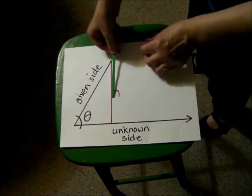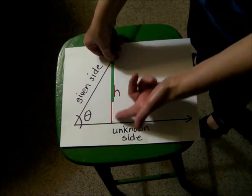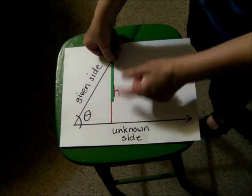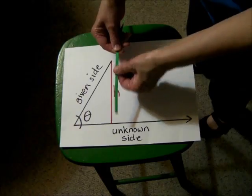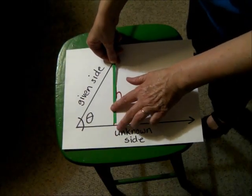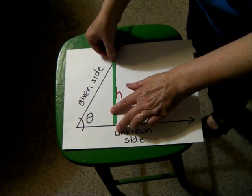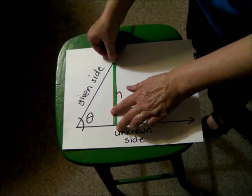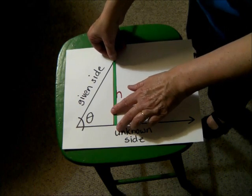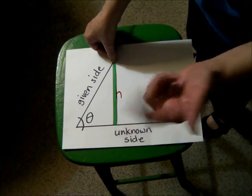If the opposite side is too short, we can't draw a triangle — even if it's just a little too short. But if it's exactly the same size as the height, we get one right triangle.